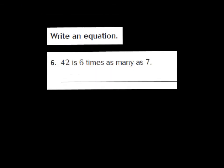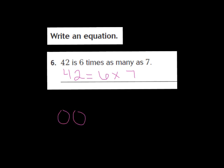Boys and girls, we need to write an equation that goes to this comparison sentence. Number six says: 42 is six times as many as seven. Go ahead and pause the video and work this one out on your own. Press play when you're ready to go over the answer with me. Our sentence said 42 is six times as many as seven, so: 42 equals six times seven. Did you get that one right? I am so proud of you. Give yourselves a happy face. Good job.